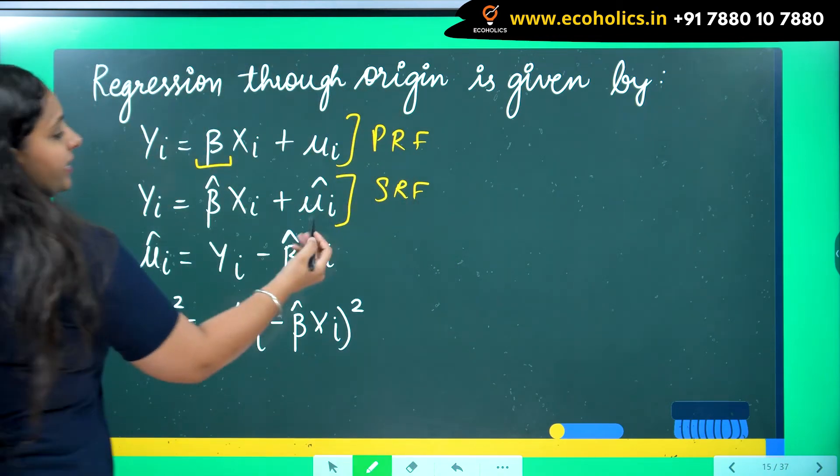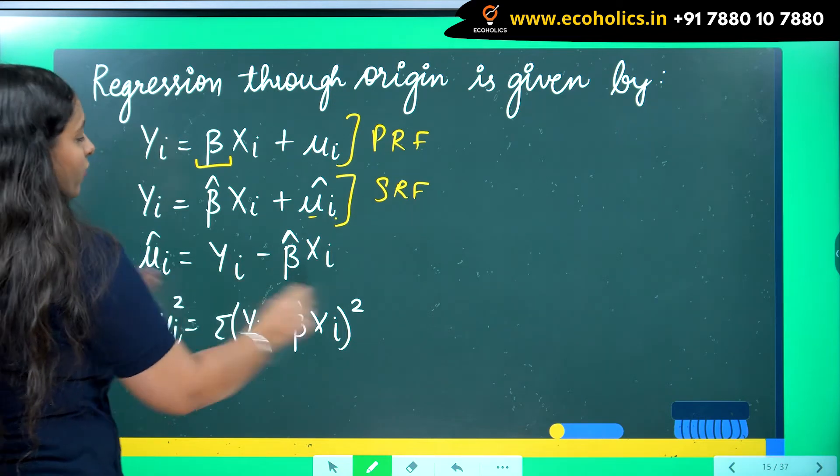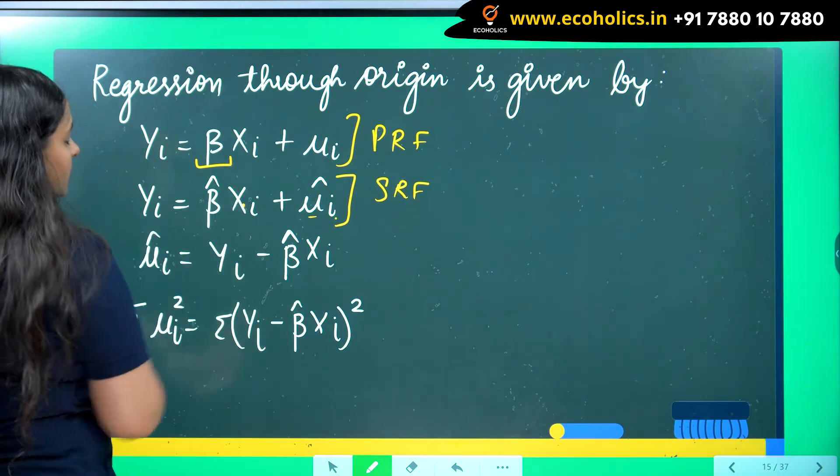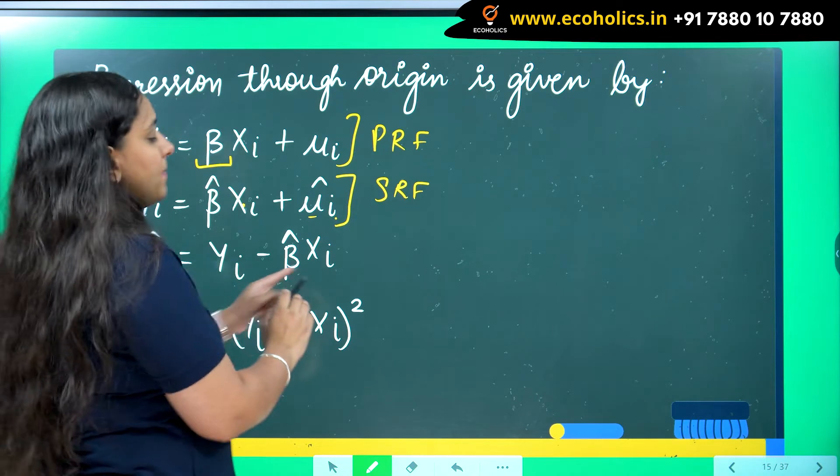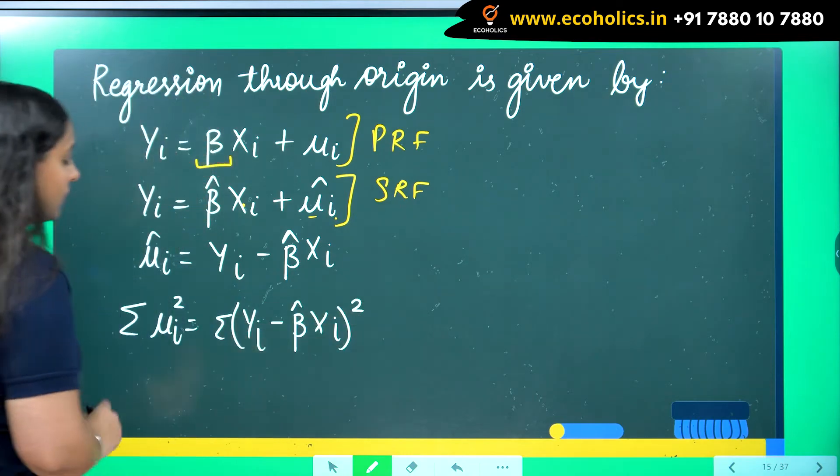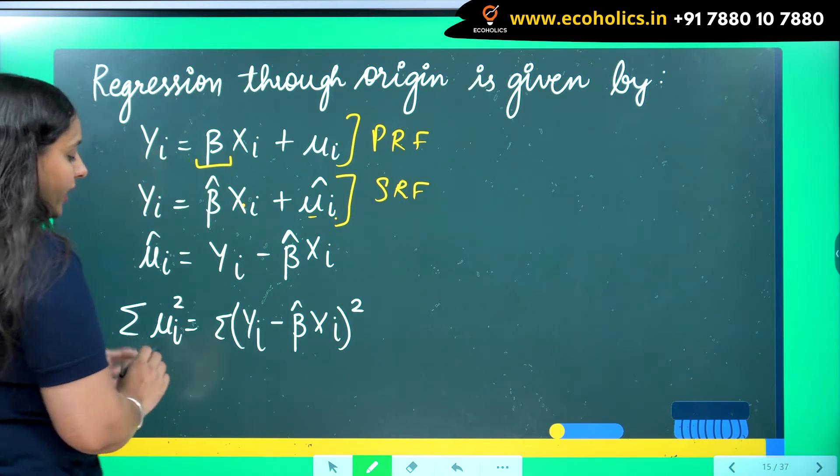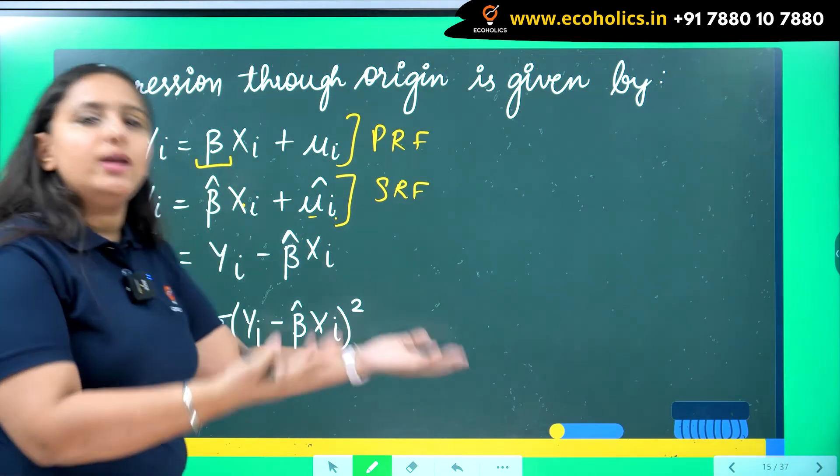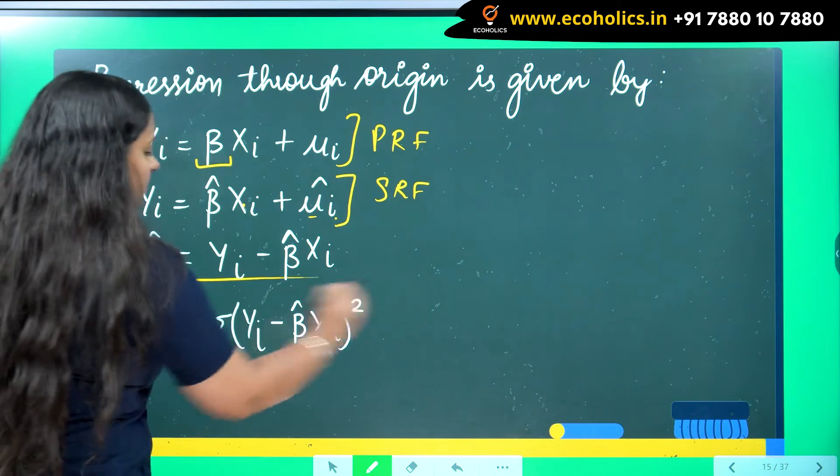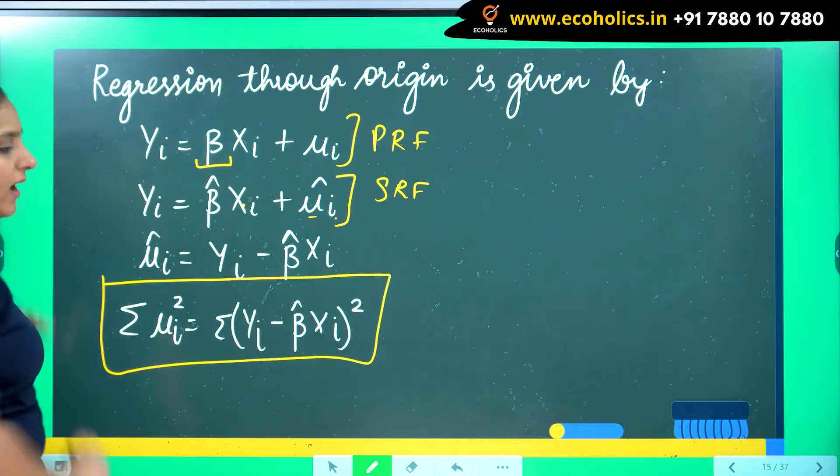Now I'm writing mu i hat in terms of other variables. Taking this to the other side, it becomes yi minus beta hat xi. Now for OLS, I will be requiring mu i square summation. Doing the squaring both sides and then the summation. So this is my final value.